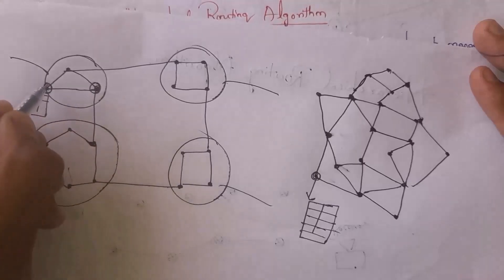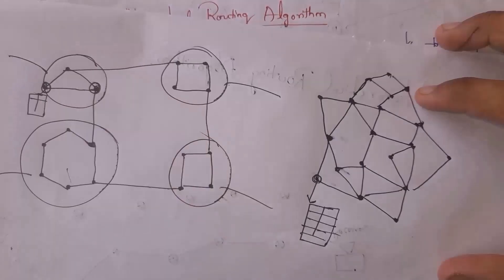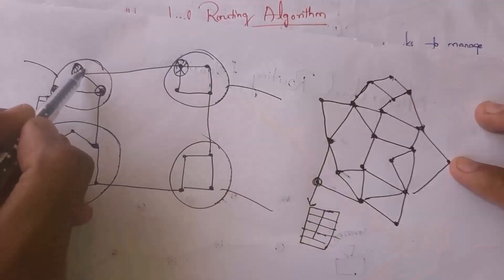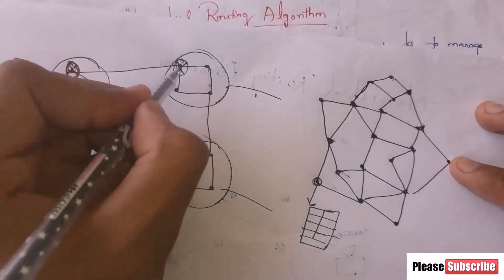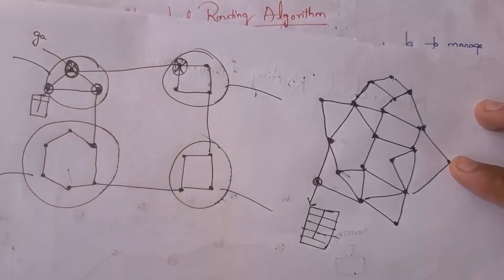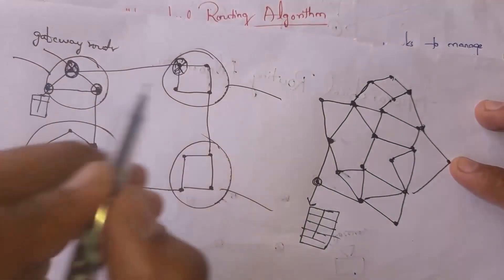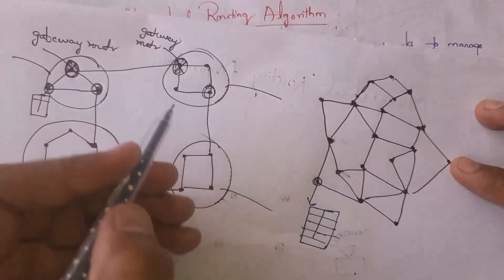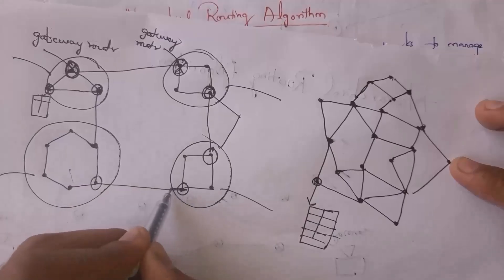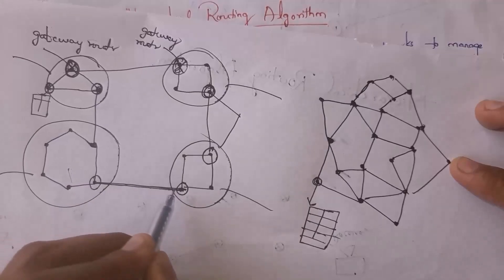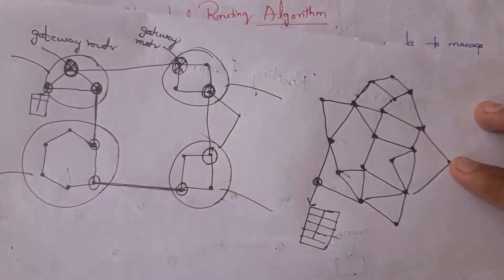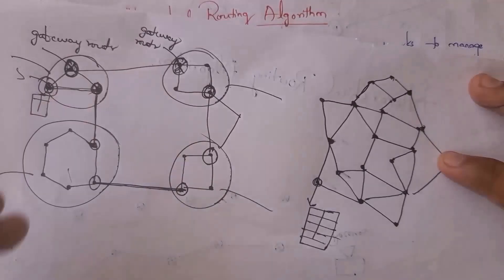If two routers belong to the same region, they can communicate directly. However, if a router in one region is connected to a router in another region, we call that a special router — the gateway router. So a router that is connected to another region is called a gateway router, and gateway routers allow communication between different regions.